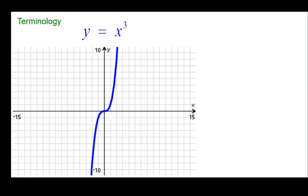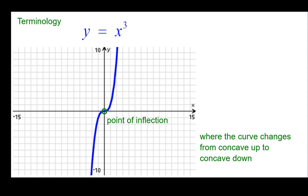Let's consider some terminology. The origin on this graph is called the point of inflection. Point of inflection is where a curve changes concavity. So it goes from concave up in the first quadrant to concave down in the third quadrant. Half of a smile in the first quadrant. Half of a frown in the third quadrant.